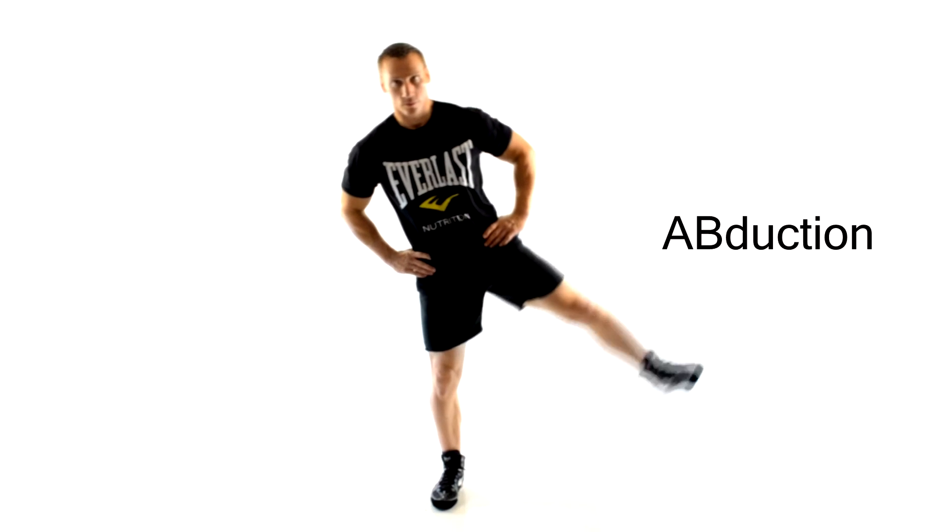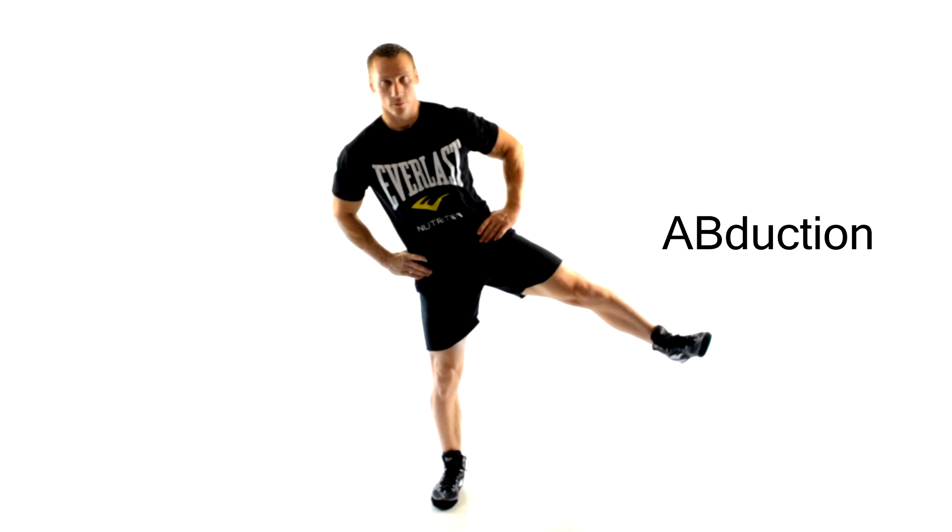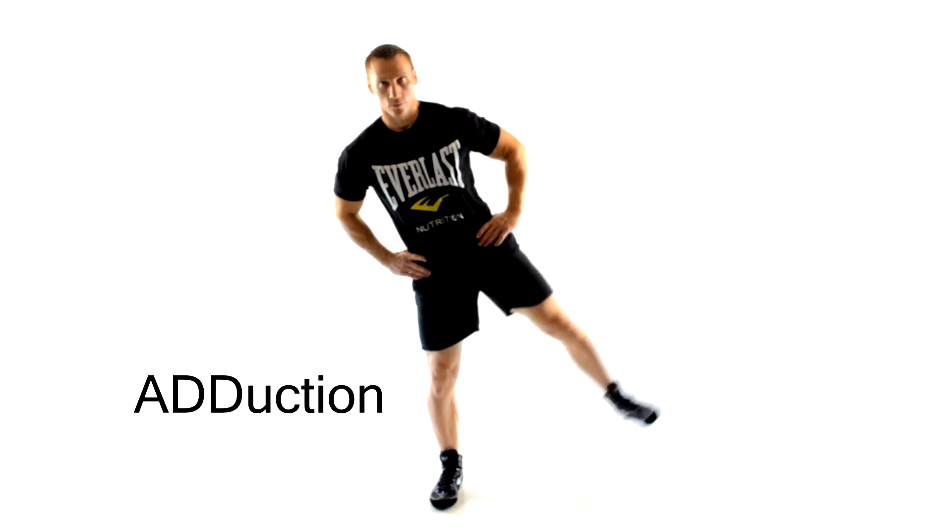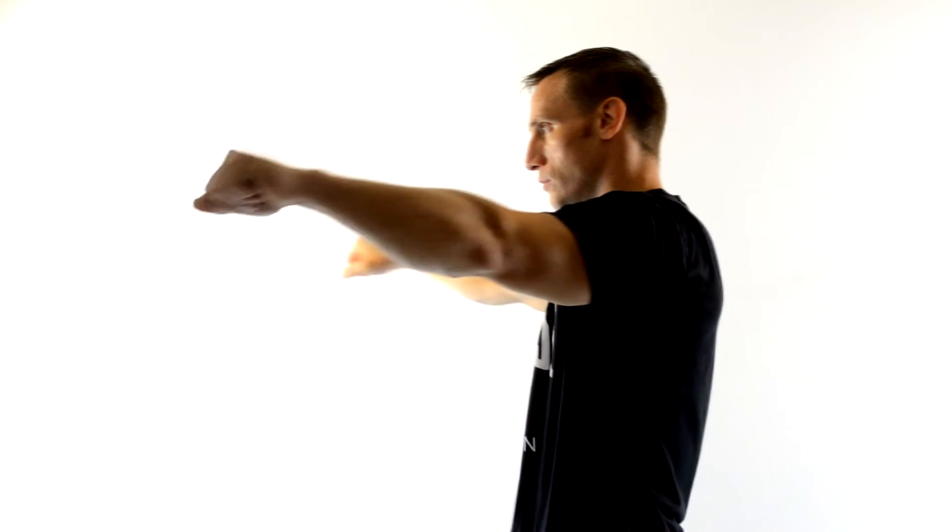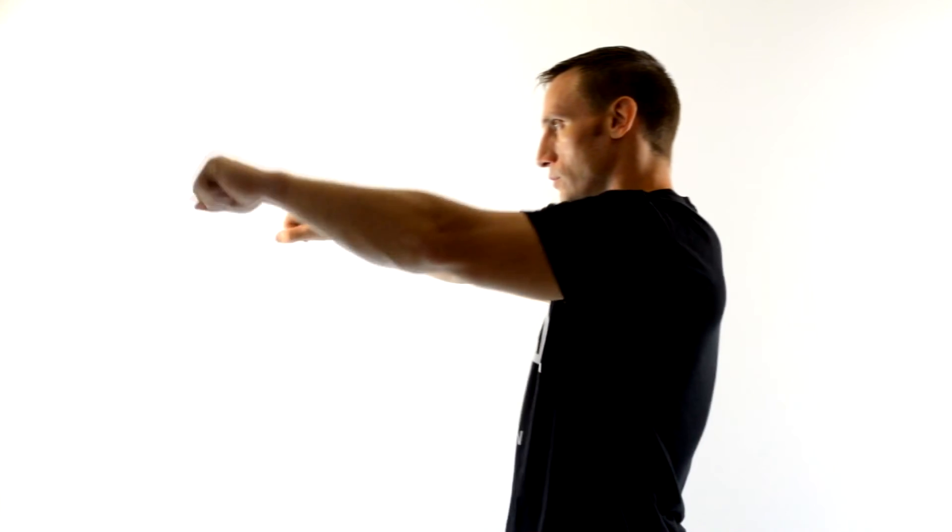We'll do the same thing with the leg. We'll move away from the midline, abduction, and then we'll come back towards the midline, adduction. Here's an example of horizontal adduction and abduction with the arm. So this is horizontal abduction with a B. And this is horizontal adduction with a D.